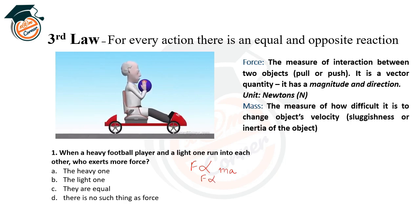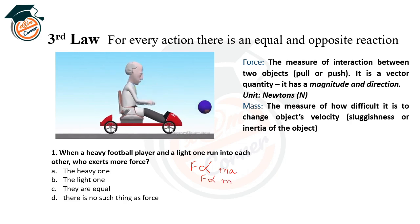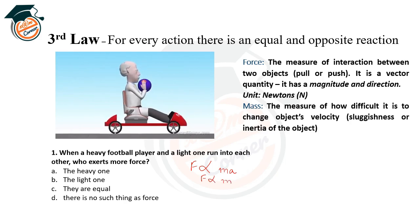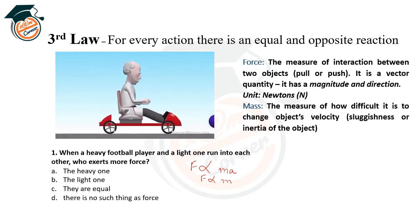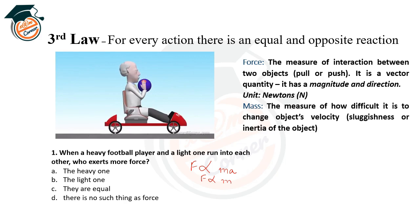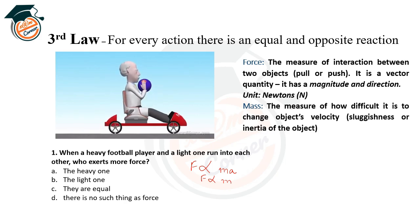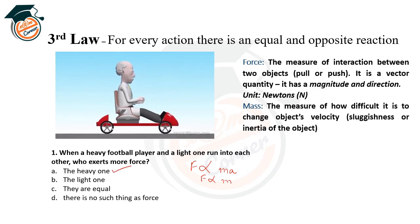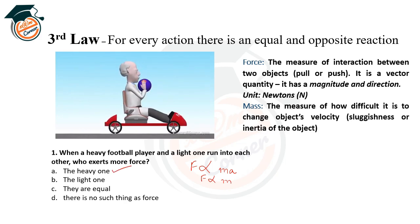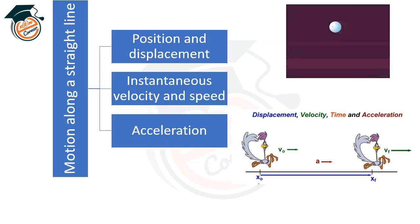Since force is directly proportional to mass times acceleration, when a heavy football player and a light one collide, the heavier one exerts more force. The mass of the heavier body is more, so the force applied is also more. That is why the heavy body exerts greater force during a collision.